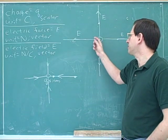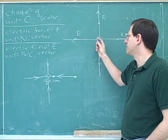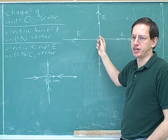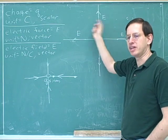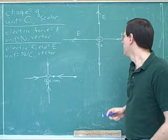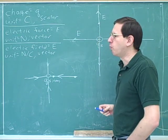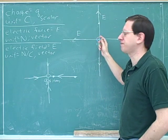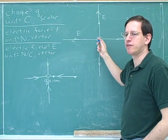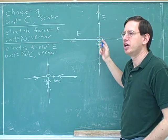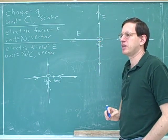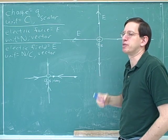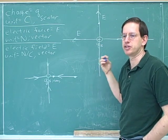Remember that the number of electric field lines that we draw is a little bit arbitrary. I've only drawn four electric field lines here, but there's really an infinite number. But once you pick a certain number of electric field lines to draw for one charge, then the number of electric field lines you draw for other charges should be proportional to the first case.